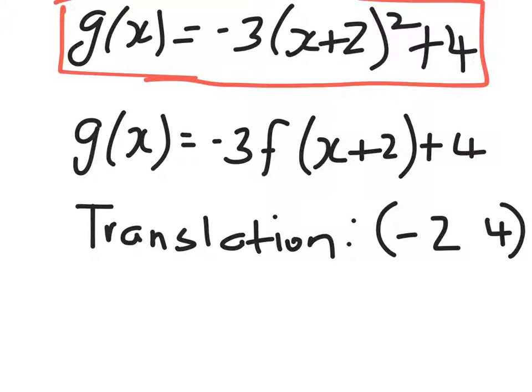The translation was by the vector (minus 2, 4) — written like a little matrix, clearly separated so it's not minus 24, and in parentheses without a comma, because if there's a comma you'd think it's a pair of coordinates. It's not — it's telling you the translation. It's moved the graph two units to the left and four units up. That's what's happened to the vertex, so the whole graph has been shifted like that.